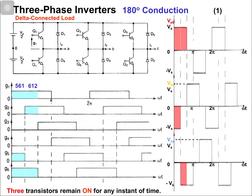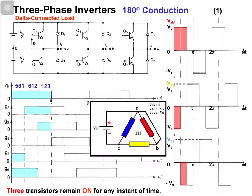The next switching state is 1, 2, 3 — switches 1, 2, and 3 are in the on state. Because of switch 1, phase A is connected with the positive terminal. Because of switch 2, phase C is connected with the negative terminal. Because of switch 3, phase B is connected with the positive terminal. The equivalent circuit is shown.